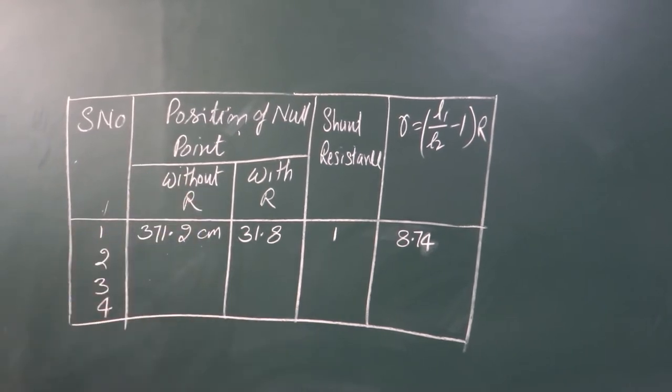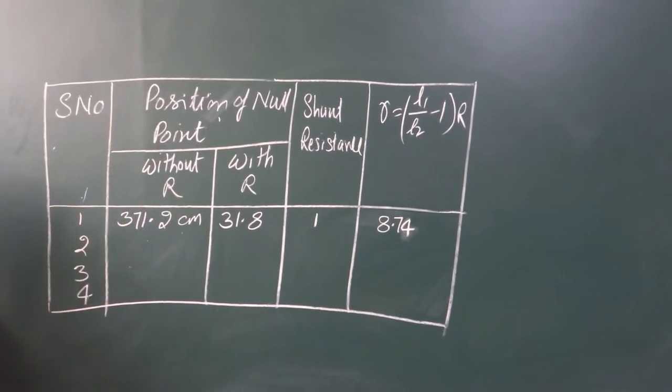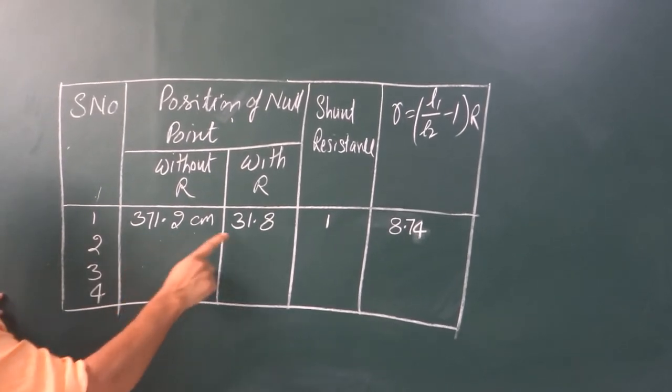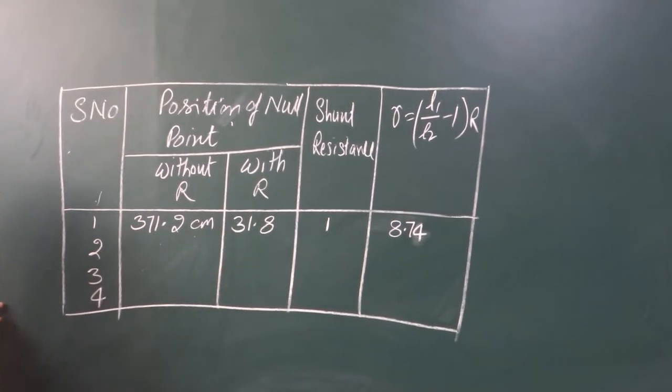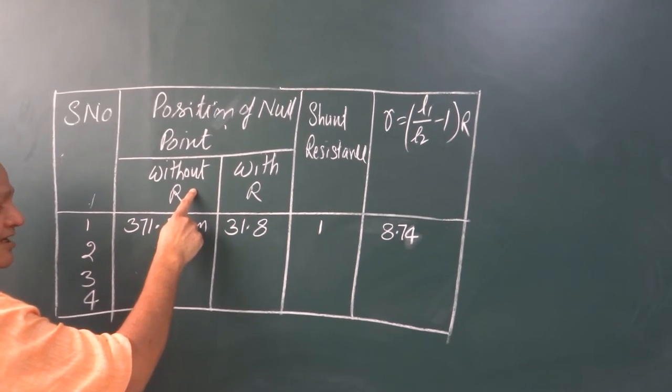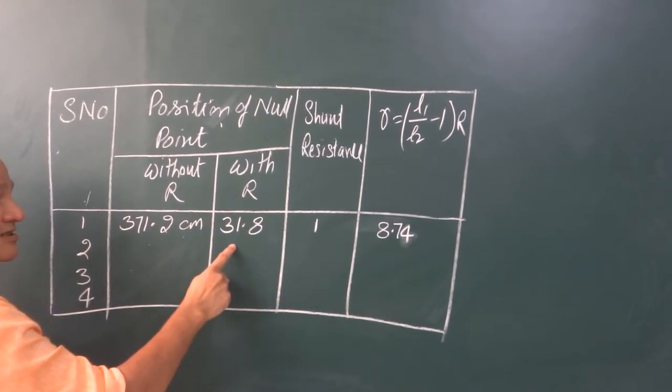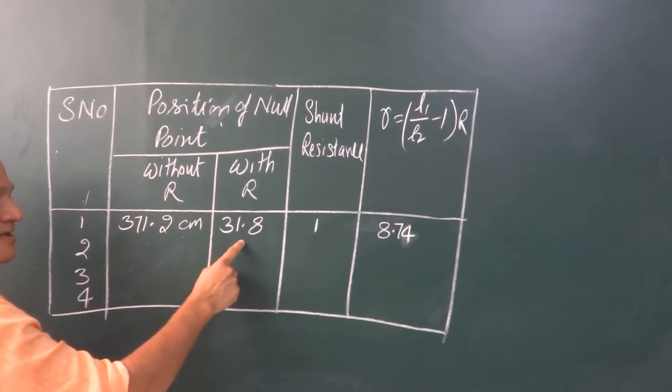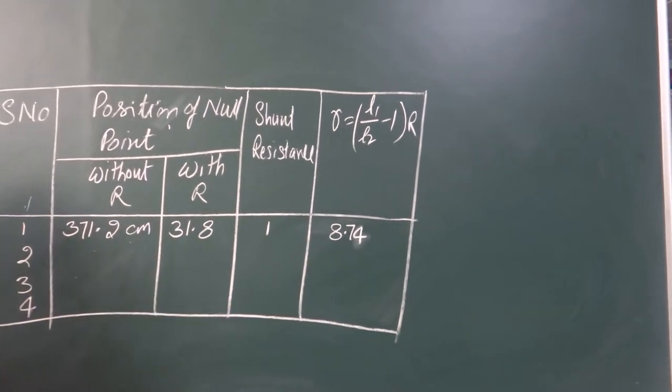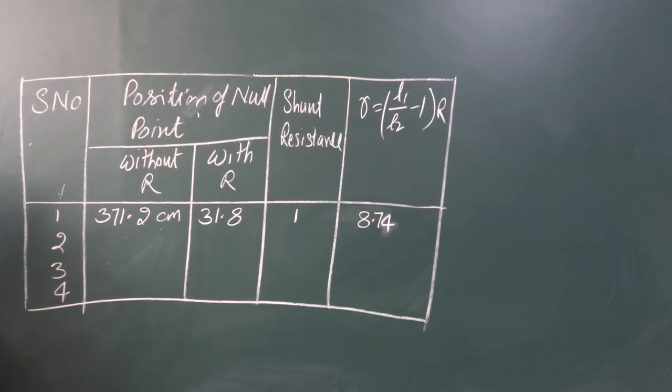This is a table for taking readings and fillings. You can see observation table right here. You can introduce one more column if you want to keep EMF reading with you also. However, in each reading or each set of the reading, I mean to say for L1 and L2, you have to keep EMF reading as constant. As I discussed, we have obtained without resistance that with the main source L1 was found 371.2. While I introduce resistance R, that is from the shunt resistance connected in parallel to the Leclanche cell, null point is obtained 31.8. Shunt resistance which we pulled out from the resistance box was 1. So internal resistance of the cell comes out to be 8.74.